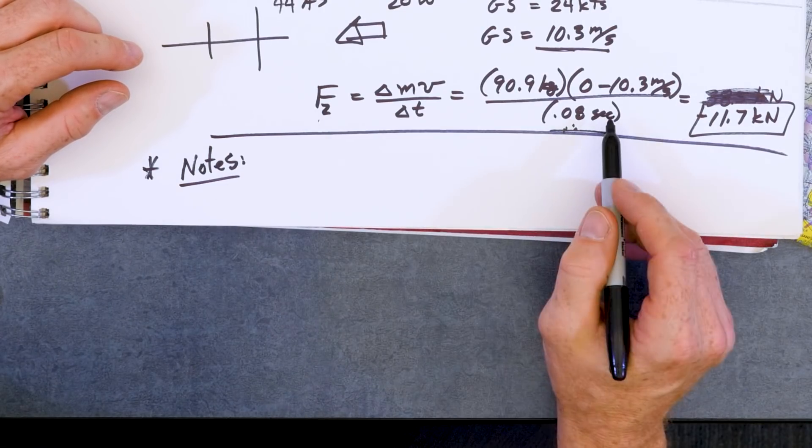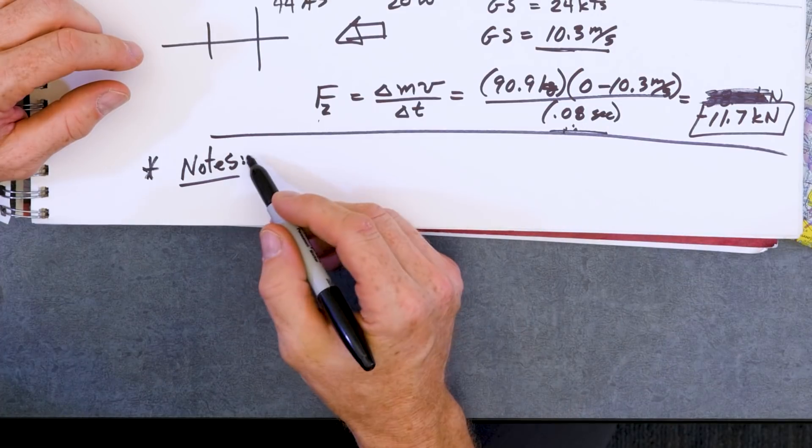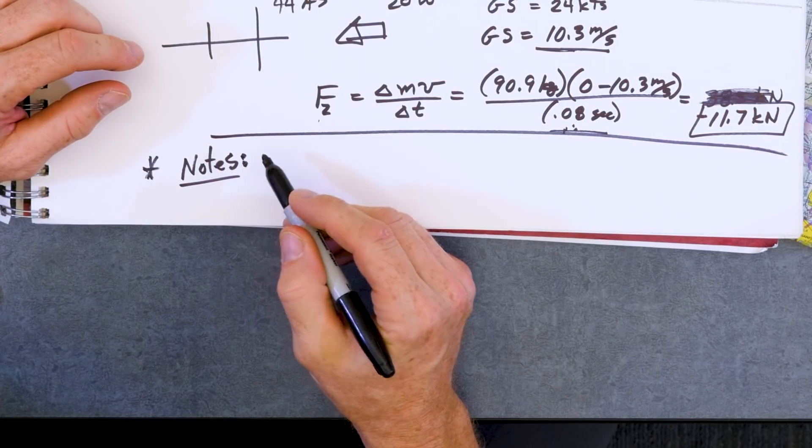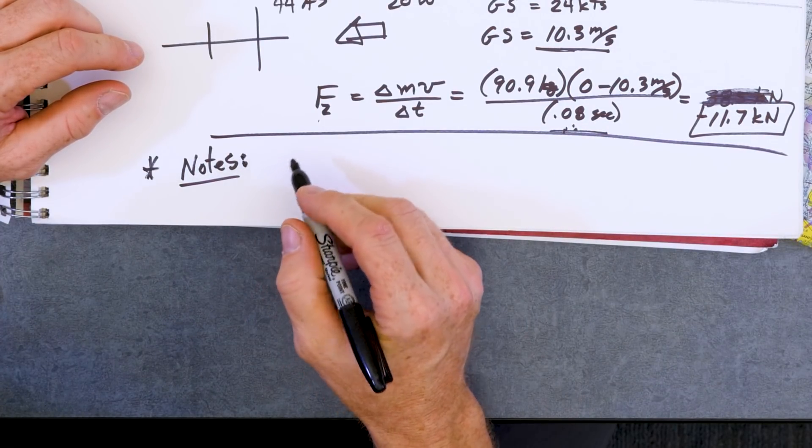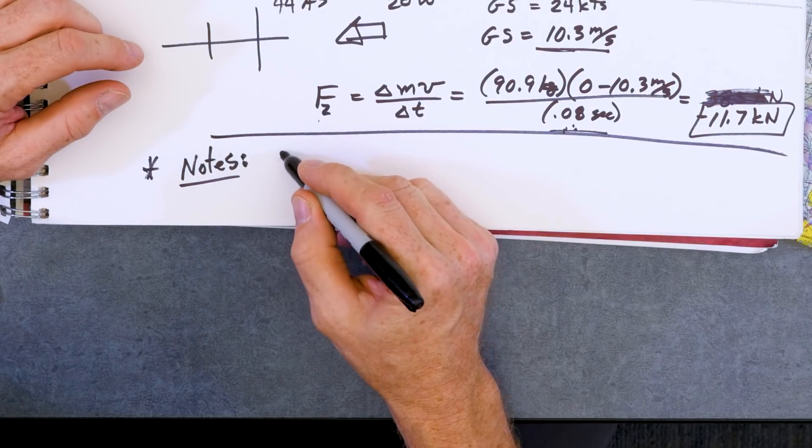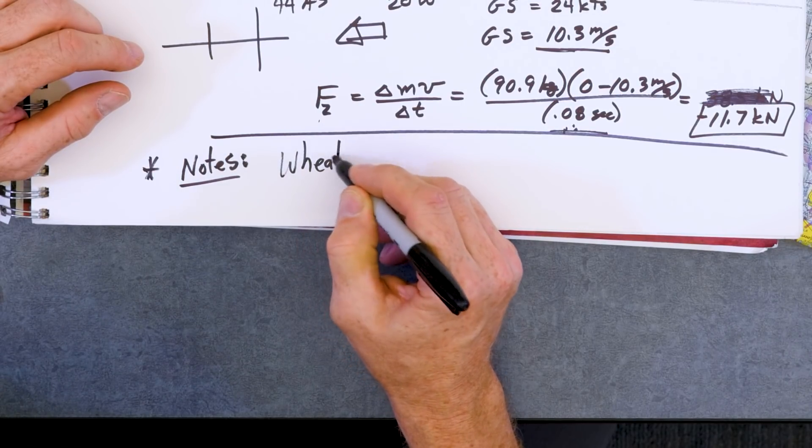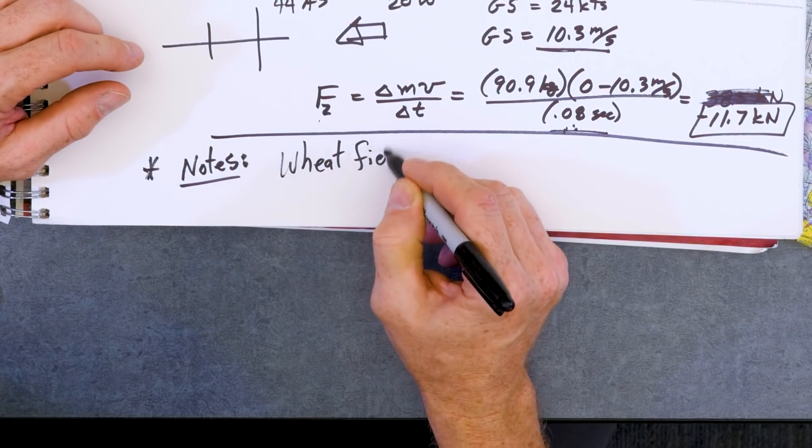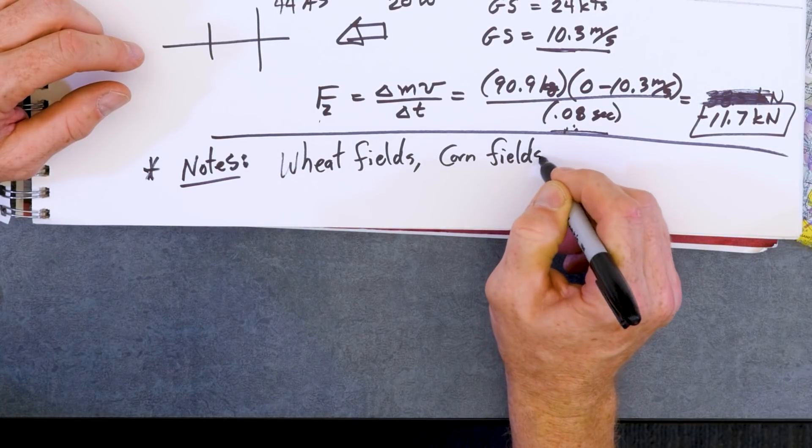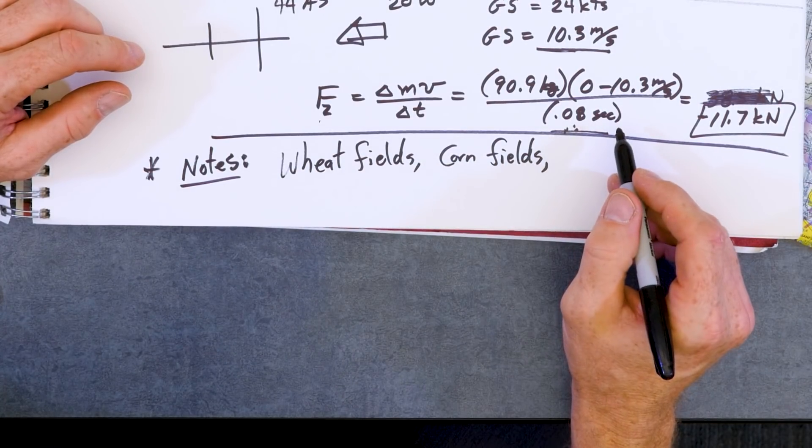So some notes on this concept relative to the airplane flying handbook and other FAA publications, they talk about wheat fields, corn fields, you know, to extend that time, which will reduce the force. They also talk about some reports where pilots have intentionally sheared the wings.